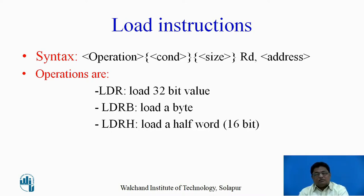There are three load instructions defined. LDR loads a 32-bit value. LDRB takes a byte value from memory into the specified register. LDRH loads a register with a 16-bit value, called load a half word.